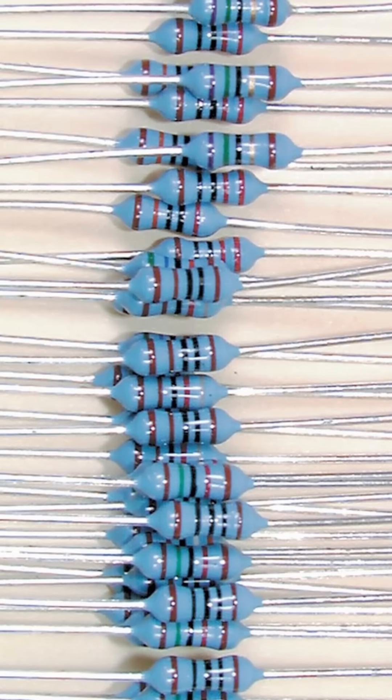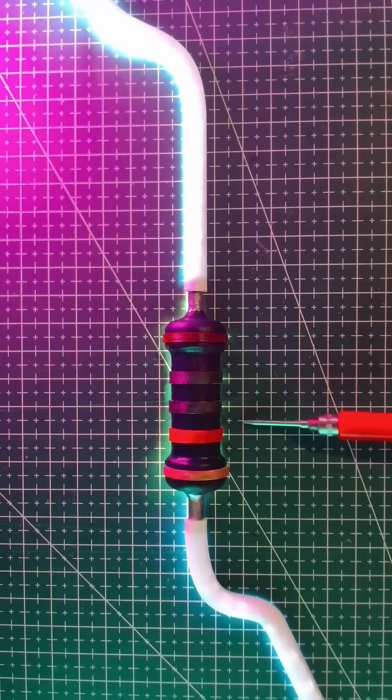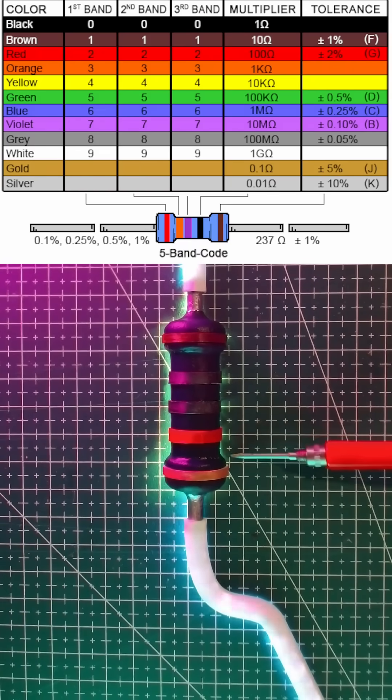The amount of resistance is measured in ohms. On these film resistors, those colored bands tell the story. On our big boy here, brown, black, black, red and gold tells us this is a 10,000 ohm resistor.